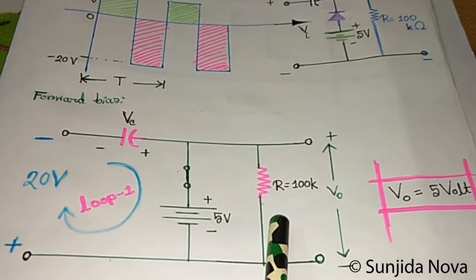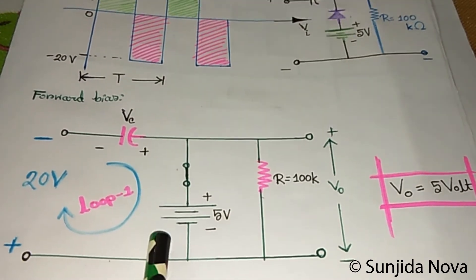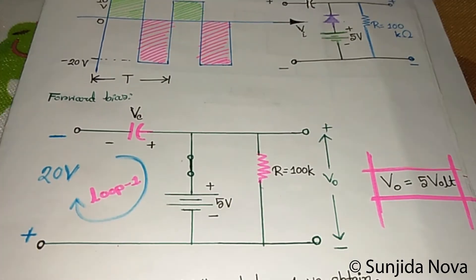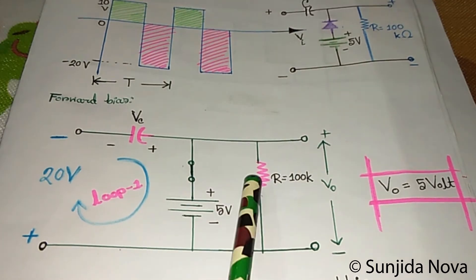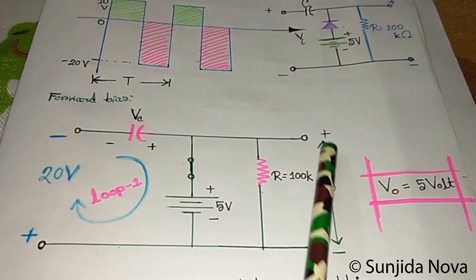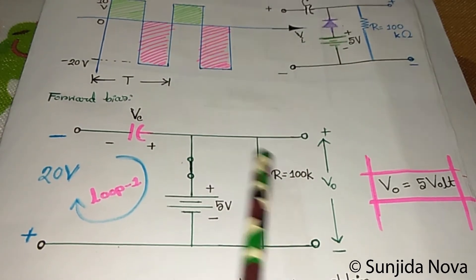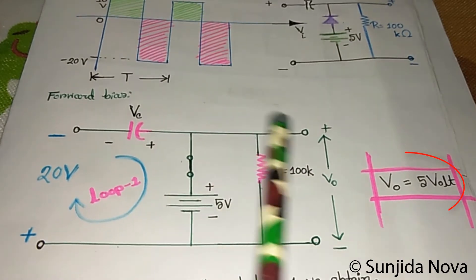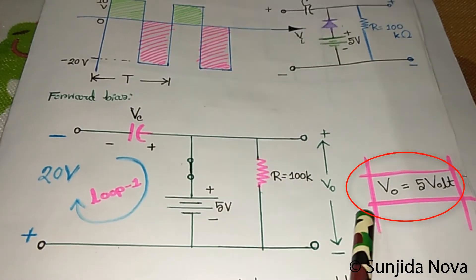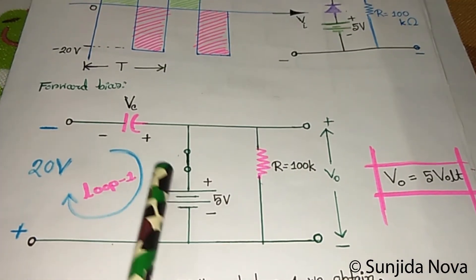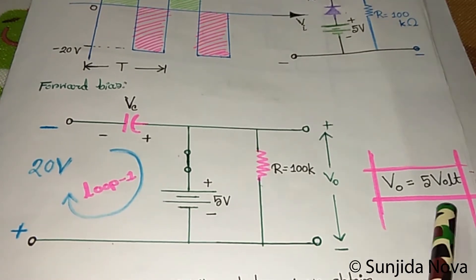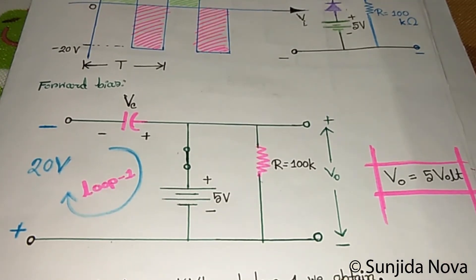We can observe that the 5 volt source is connected in parallel with the 100k resistor. In a parallel circuit, voltage is always equal across all elements. So the voltage across the resistor and the output will be the same. Therefore our output voltage will be 5 volts, regardless of what the input is.